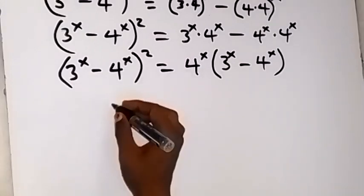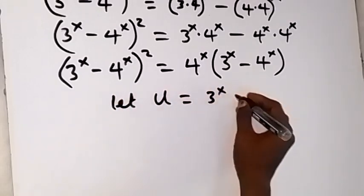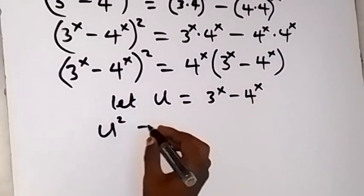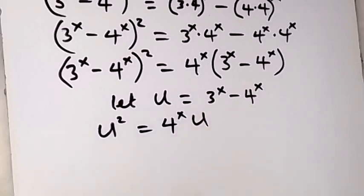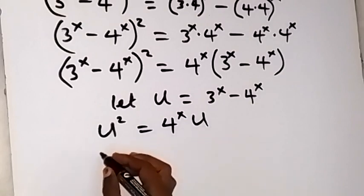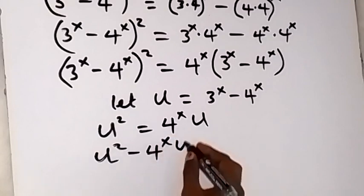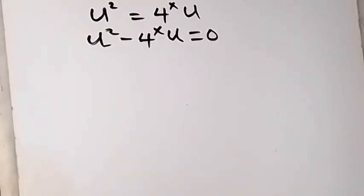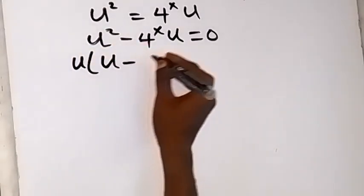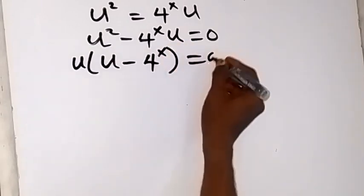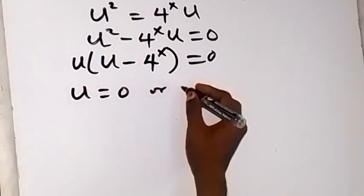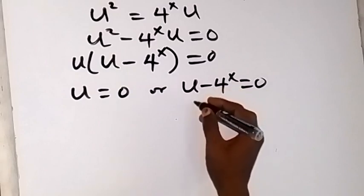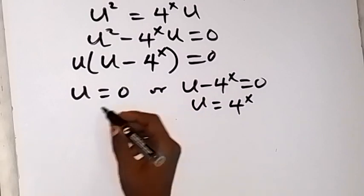We see the same expression in both the bracket on the right and the left side. Let u equal 3 raised to power x minus 4 raised to power x. Then the equation becomes u squared equals 4 raised to power x times u. Taking 4 raised to power x times u to the other side gives u squared minus 4 raised to power x times u equals 0. Factoring out u: u times (u minus 4 raised to power x) equals 0. So either u equals 0, or u minus 4 raised to power x equals 0, meaning u equals 4 raised to power x.